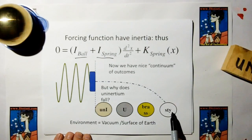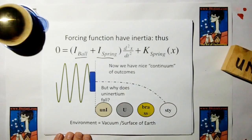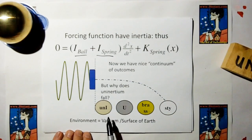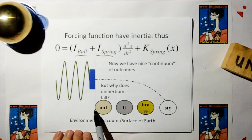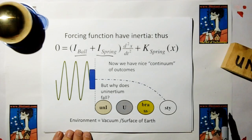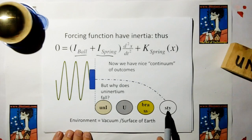The styrofoam ball is going to travel the furthest, followed by brass, followed by uranium, and the uninertium is just going to fall straight down to the ground. Now we have a nice continuum of outcomes. If we had other masses, we could fill positions everywhere along from uninertium out to styrofoam — but it's kind of backwards. Shouldn't styrofoam be closer to the uninertium? Why do we go from zero mass to heavy mass to lighter? It's kind of backwards.